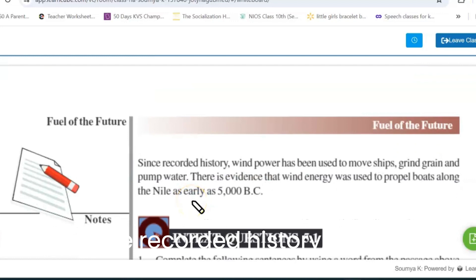Next, since recorded history, wind power has been used to move ships, grind grain, and pump water. There is evidence that wind energy was used to propel boats along the Nile as early as 5000 BC.